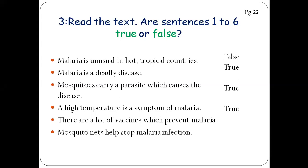A high temperature is a symptom of malaria. See, it's true. There are a lot of vaccines which prevent malaria. As the writer said, there are a lot of vaccines, but still there is no vaccine yet. Mosquito nets help stop malaria infection. Everybody knows it's true. I hope it is clear up to now. Show me the sign of thumbs up, then I start the next activity with you. Yes, if it is clear to everybody. Give me your sign, give me your beautiful kind of thumbs up.